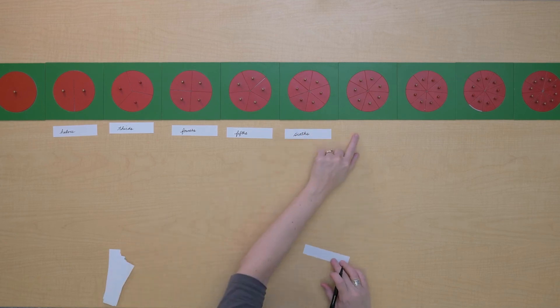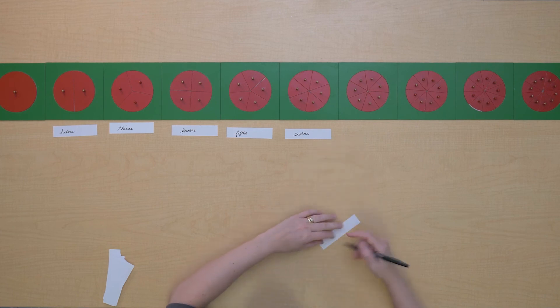This unit has seven equal pieces. So these are sevenths.